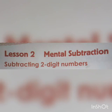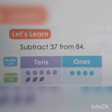Happy day my dear kids, today we are going to see mental subtraction with two digit numbers. Let's see the problem: subtract 37 from 84. In 84, 4 is in one's place and 8 is in ten's place.